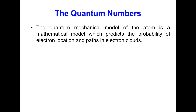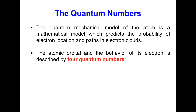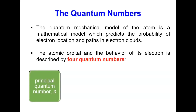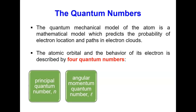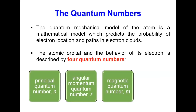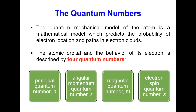The quantum mechanical model of the atom is a mathematical model which predicts the probability of electron location and path in electron clouds. The atomic orbital and the behavior of its electron is described by four quantum numbers. In simpler words, the quantum numbers enable us to give an address to locate the position of the electron in electron clouds.